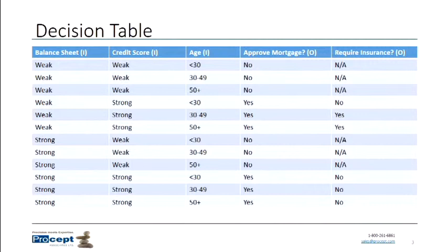The key thing with your decision table is you have to identify all of the possible combinations. If you miss a combination, you're missing a potential scenario that might occur. This can grow very quickly — if you have six inputs that each only have two values, that's two to the sixth, which is 64 rows in your table. You can see this could grow very quickly into a very large and unwieldy table depending on the number of inputs and potential values.